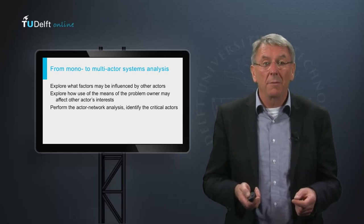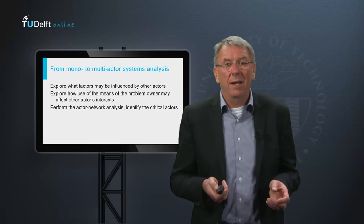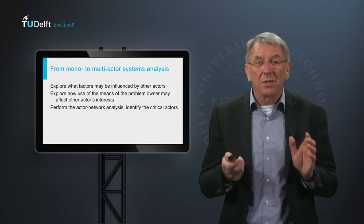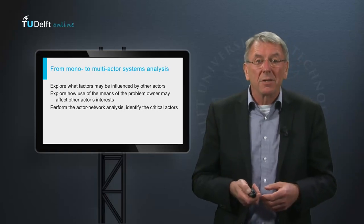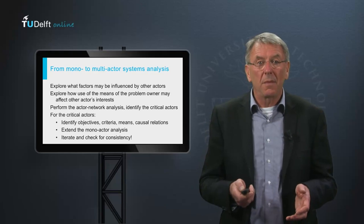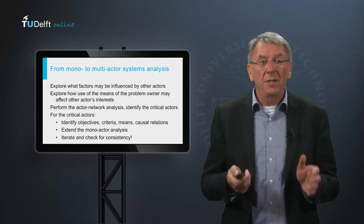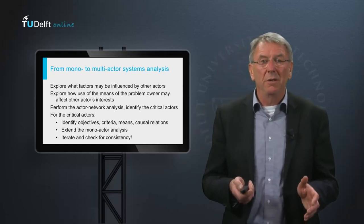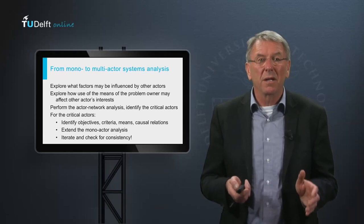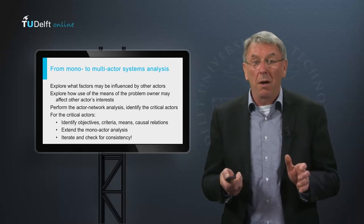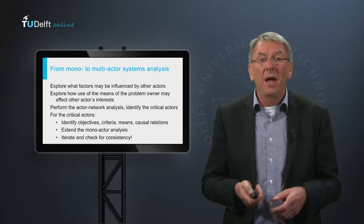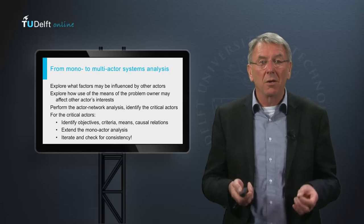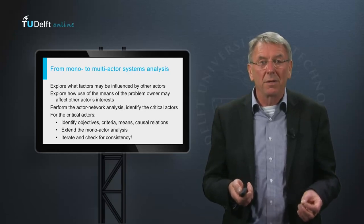The actor analysis helps you determine who the critical actors are — those that the problem owner cannot ignore. Please watch a separate tutorial on actor analysis to learn much more about this. As a fourth step, perform a systems analysis for each of the critical actors. Focus your attention on those means and objectives of the critical actors that may interfere with, or are otherwise relevant to, your problem owner. Then extend your original mono-actor system diagram by including the relevant criteria and means of the critical actors.